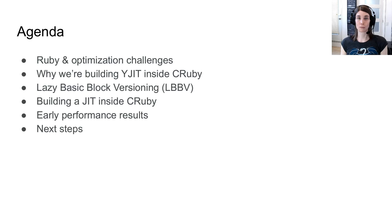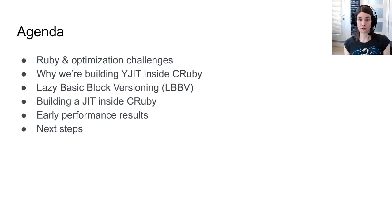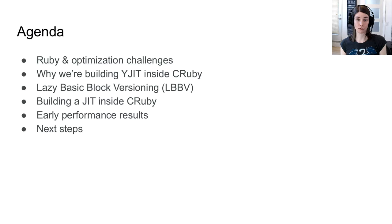Today I'll be telling you about YJIT, which is a just-in-time compiler that we're building inside of CRuby, the reference implementation of Ruby. I'll cover Ruby and some of the optimization challenges, why we're building YJIT inside of CRuby, lazy basic block versioning, the JIT compiler architecture at the heart of YJIT, some implementation choices, and finally some early performance results and next steps.